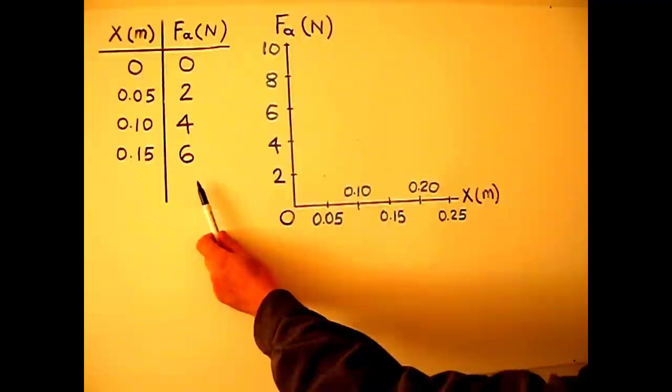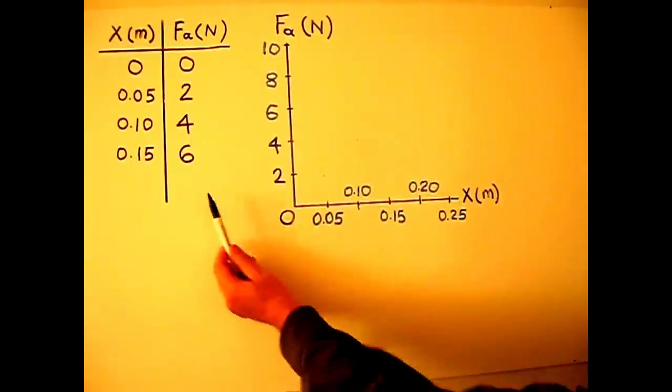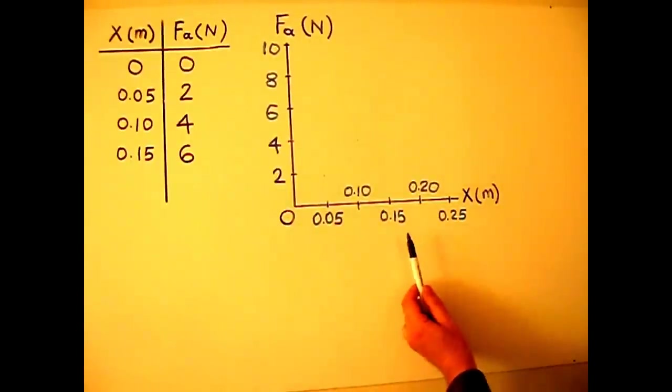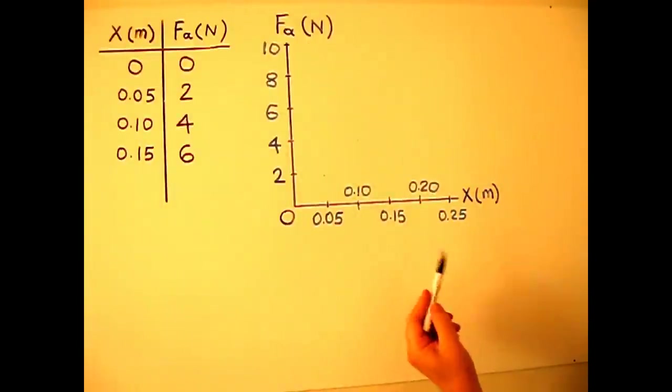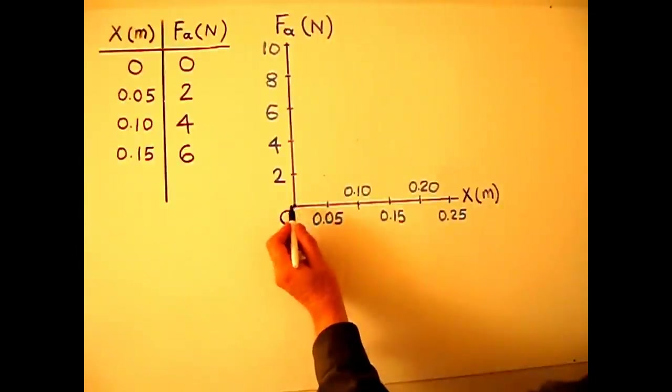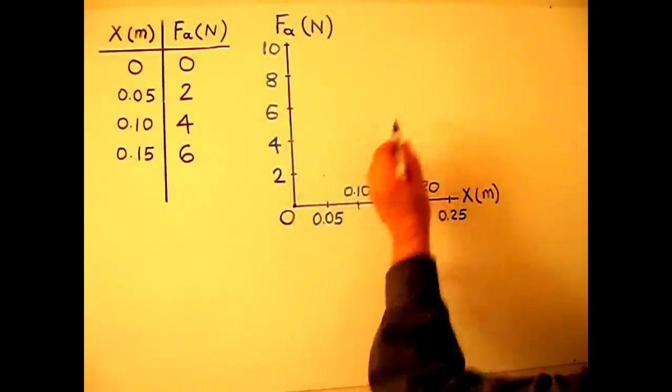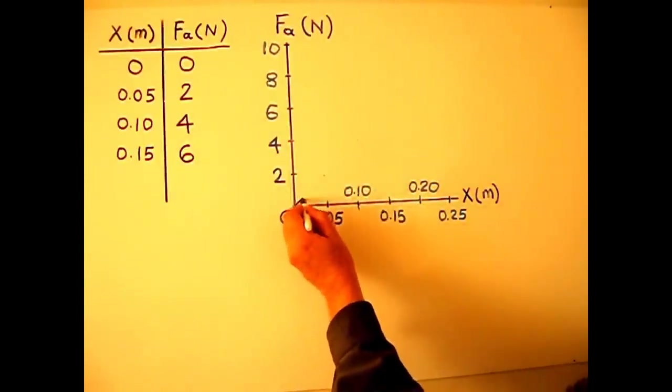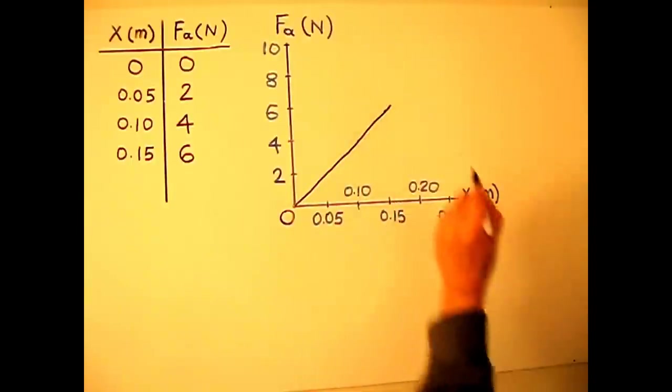We prepared a table of values from our experiment. Let me plot those values on a graph. Horizontal axis x per meter and applied force in newtons. This first one 0, 0. The second point, third one, this one. When we draw the line, it comes like this.